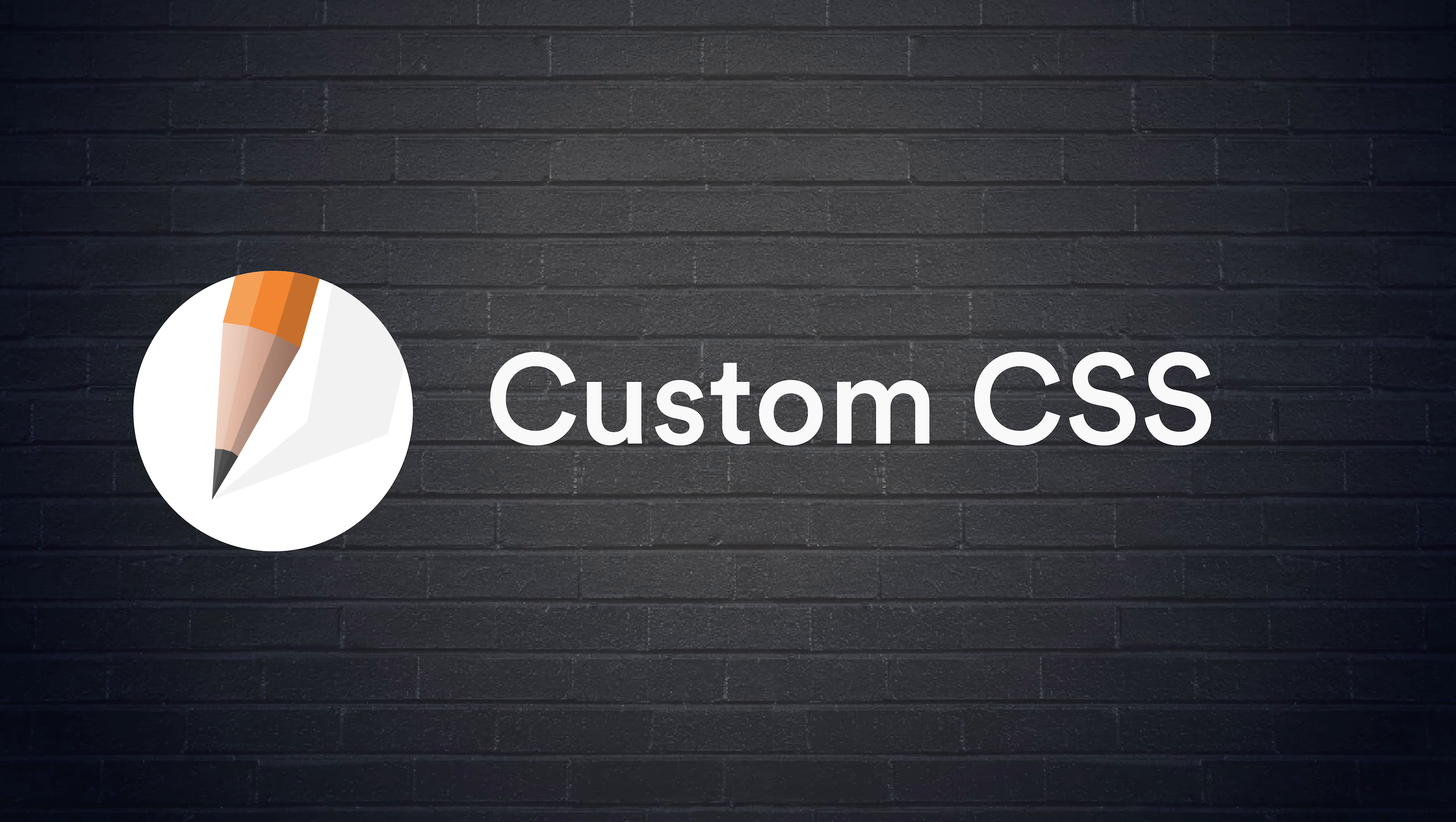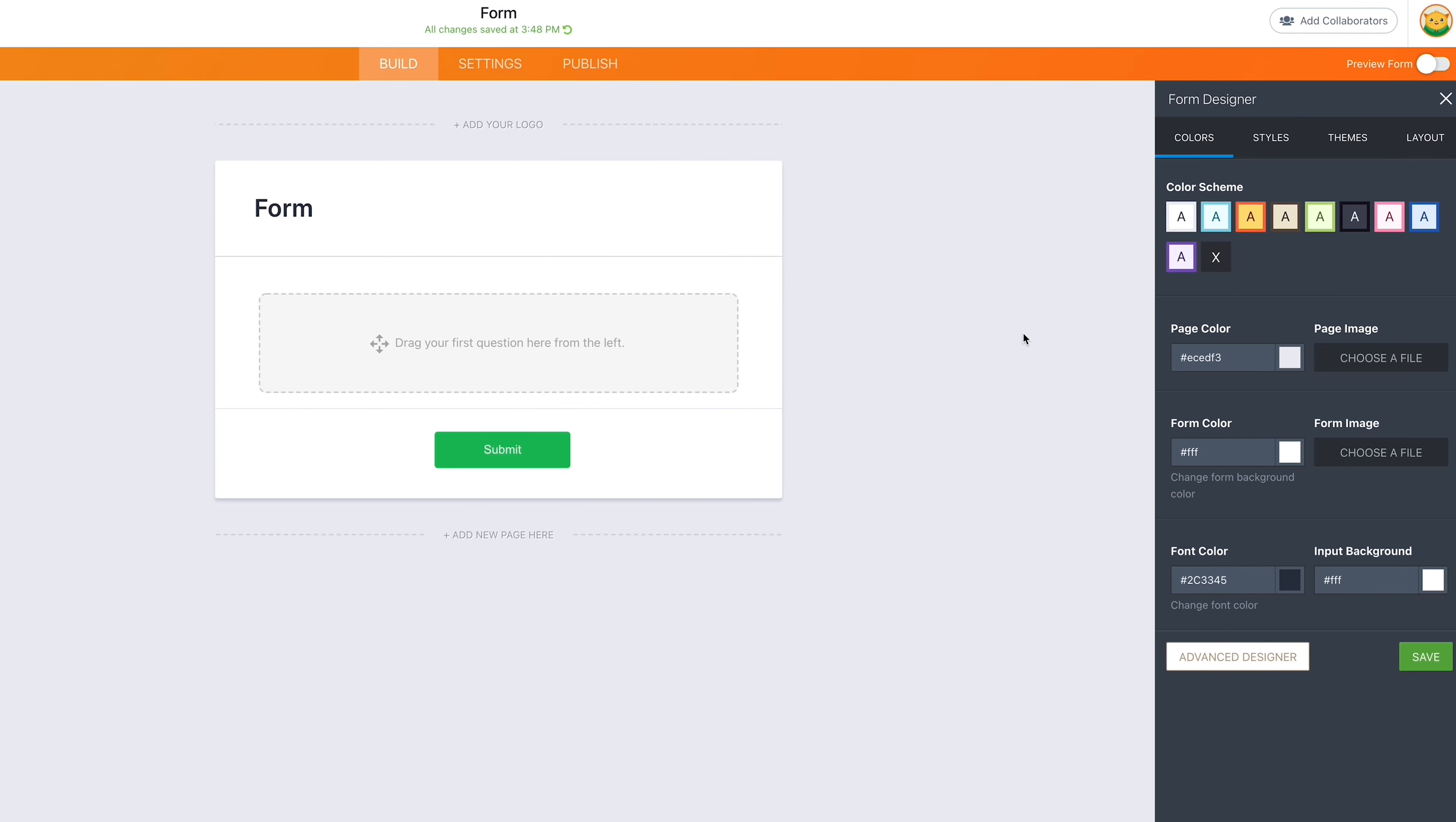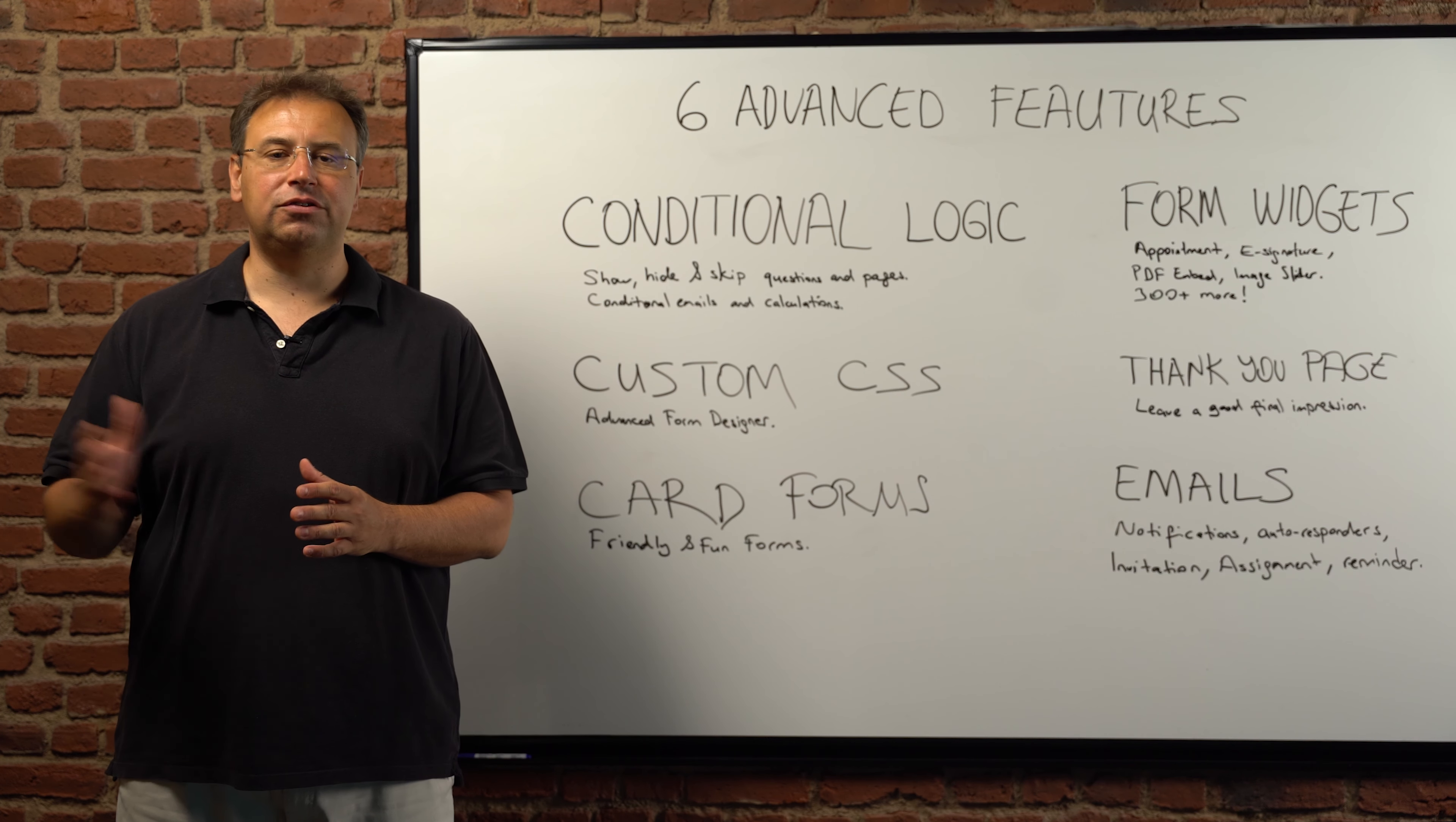The second one is custom CSS. JotForm has a feature called Advanced Form Designer. It's a powerful design tool that gives you full control of your form designs. Advanced Form Designer also includes a CSS code editor. CSS is a very easy to learn style programming language, and the Advanced Form Designer allows you to edit CSS in your forms.